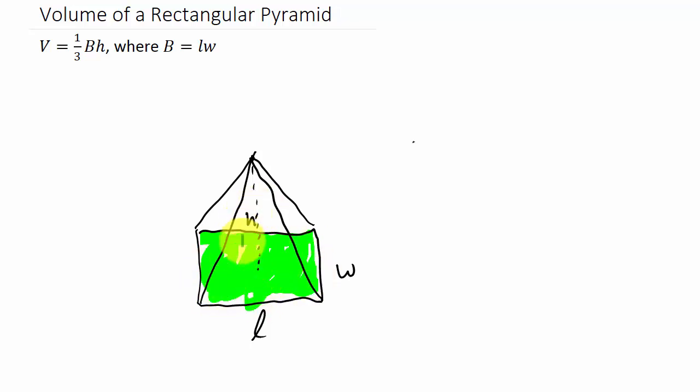Okay, we're taking the area of the base, that's B, and then we're multiplying it times one third the height. Another way you might see this formula written is V equals length times width times height over three. That's another way you could look at it.